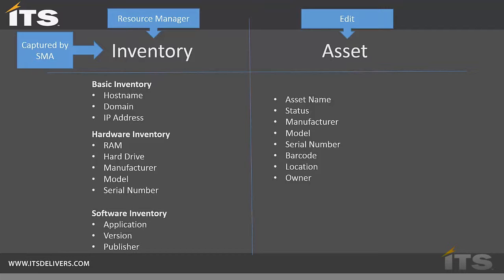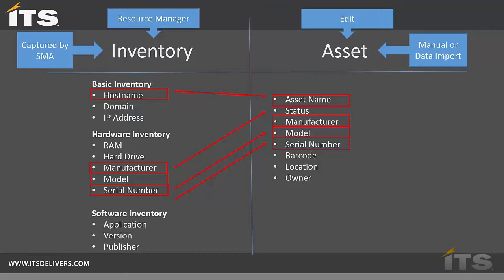Asset data is gathered manually or through a data import of some sort — data imports will be covered in another video. Looking at the data itself, some fields match up: host name and asset name usually correspond, and manufacturer, model, and serial number are exact matches on both sides. This gives us a great opportunity to get accurate data from inventory and put it into our asset records, and this data is always going to be fresh and accurate because it's gathered by an agent running inventory on the computer.